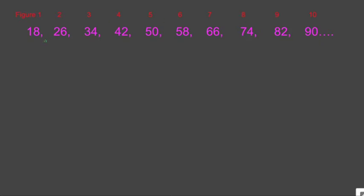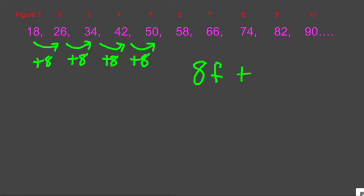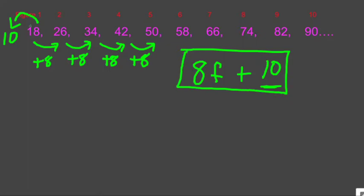Last week we learned a real simple method for writing direct formulas if we have an arithmetic sequence, meaning if we're counting by the same amount from one term to the next, then our direct formula will be that count times a variable plus something. And the something is, what number comes before the first number? What is the zeroth term? So in this case it would be 10.